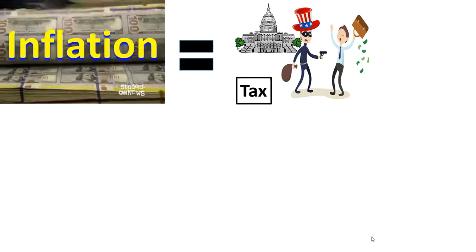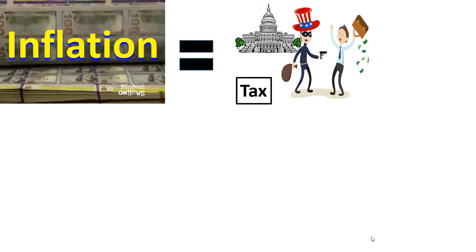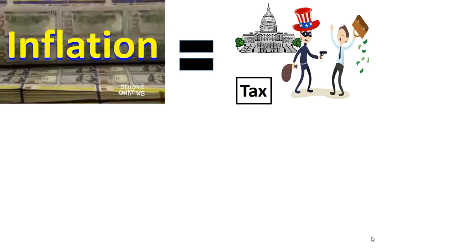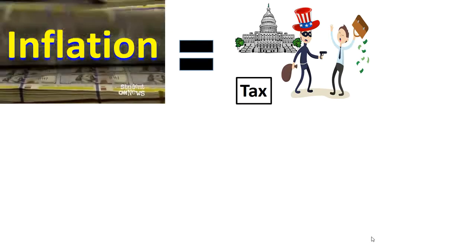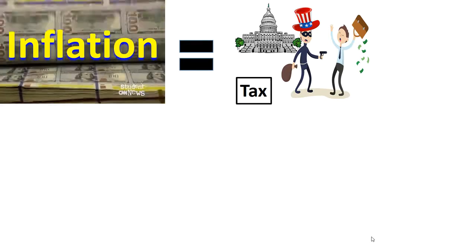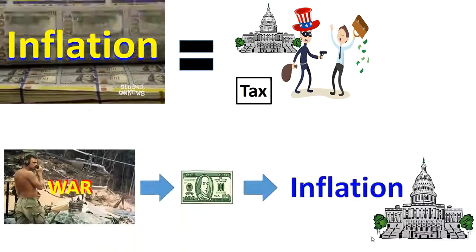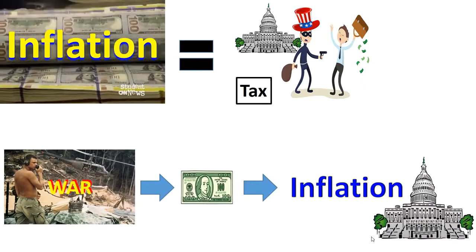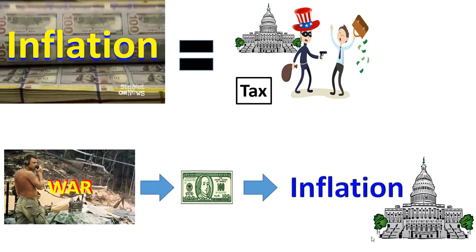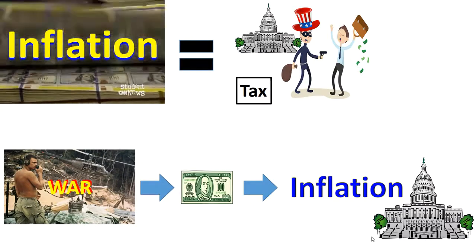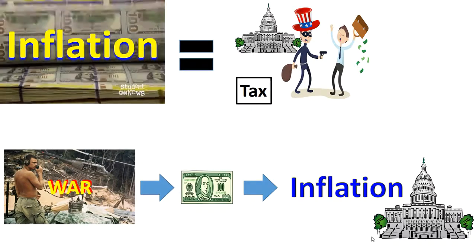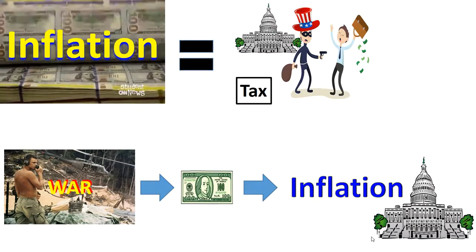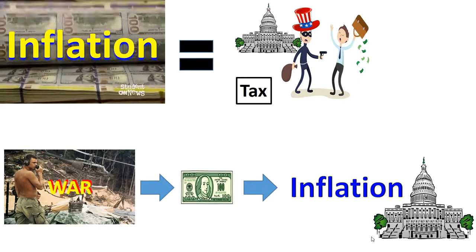We all know that taxes are a way that the government steals your money. Inflation is another way that the government steals your wealth. War is very expensive, and the government has two options: pay for the war through taxes, or just print a bunch of money to pay for the war. When you print money, you create inflation, and inflation is a hidden tax — another way they steal your money.